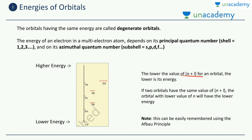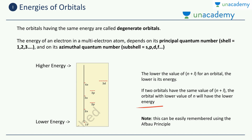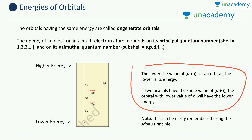But what if the n plus l value is the same for two orbitals? In that case, to break the tie, if two orbitals have the same value of n plus l, the orbital with the lower value of n will have the lower energy. So these two rules together make up the n plus l rule.